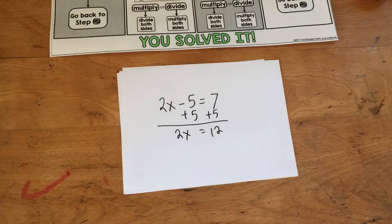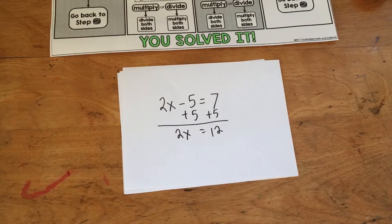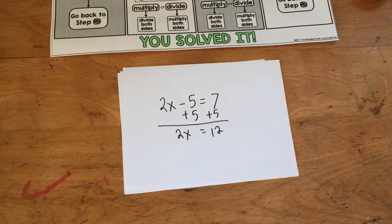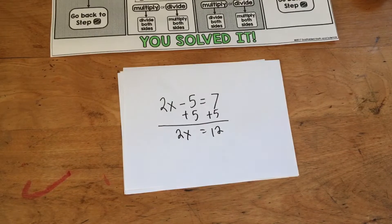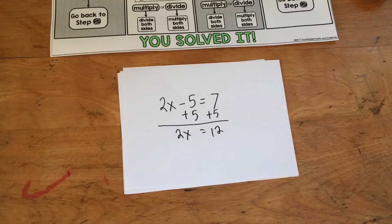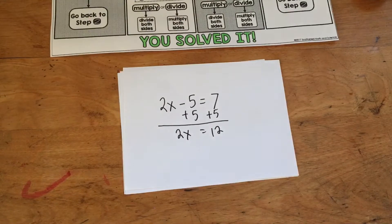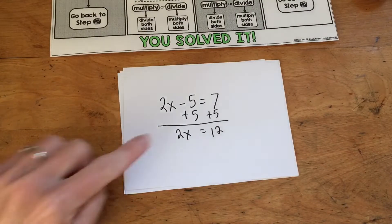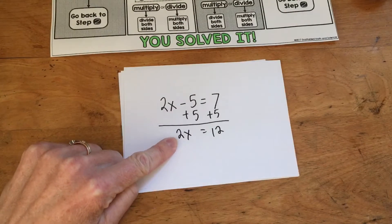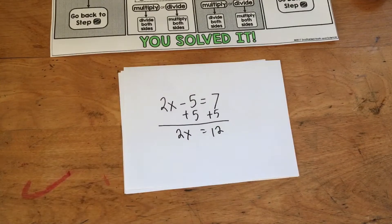I ask them again which side of the equal sign has either adding or subtracting happening, and they say this time there isn't any. I ask them is there any multiplying or dividing going on? And they'll see, maybe after some prompting, that there's a 2x here. So that means 2 times x.